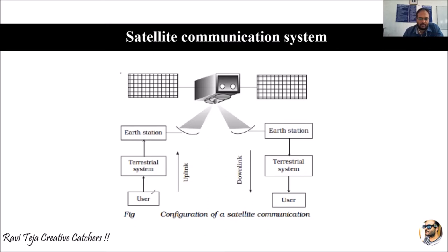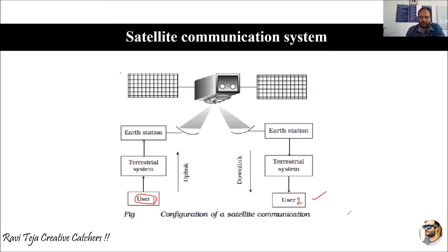This is User 1 and this is User 2. Let's say User 1 is recording some live content, and whatever User 1 records should be received by User 2 — whatever User 1 is trying to convey should reach User 2. But User 1 and User 2 are very far apart, located in different parts of the world.